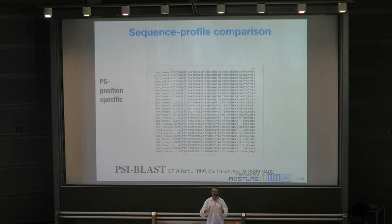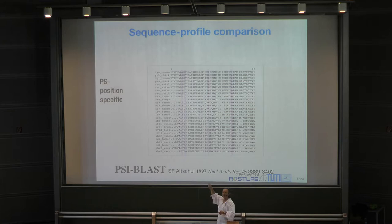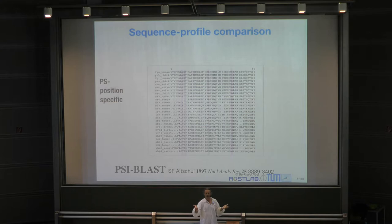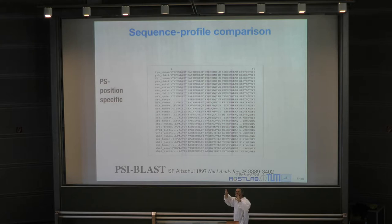Why do the second round at all? You take a sequence, do pairwise alignments against all 85 million sequences, build a family, then take the profile and run it against 85 million again. The gain is that you find new proteins because the profile is more accurate — you're zooming in on what positions are more or less important. Profile-sequence alignment is more accurate than pairwise alignment.